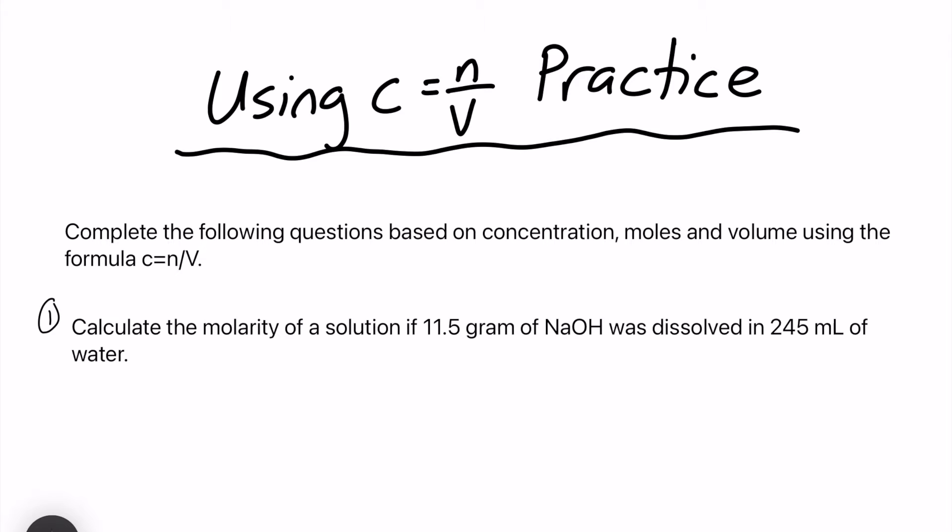Hello, welcome back to JD Science Prep. Today we are going to do a quick video relating to C equals N over V and do some practice questions. If this video does help, please like and subscribe. Basically, we are calculating concentration with moles over volume. C equals concentration, N is the variable for moles, and V is the variable for volume.